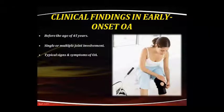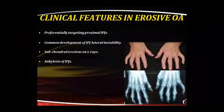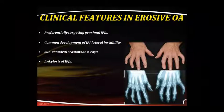Early onset osteoarthritis can involve single or multiple joints, and symptoms are typically the same. Erosive osteoarthritis presents with pain and is usually found in the proximal interphalangeal joints. IPJ lateral instability is common. Subchondral erosion can be found on X-ray. Ankylosis can also occur in IPJs.